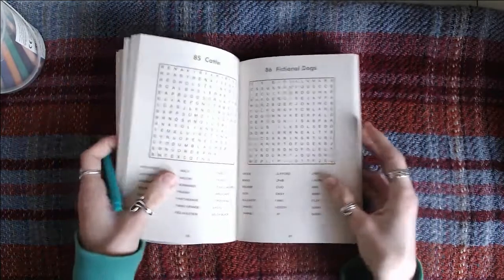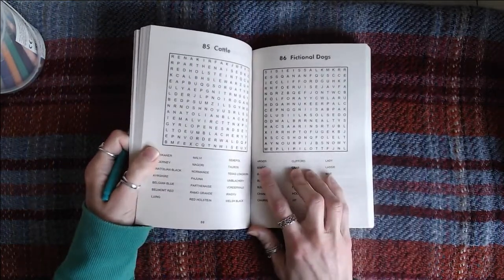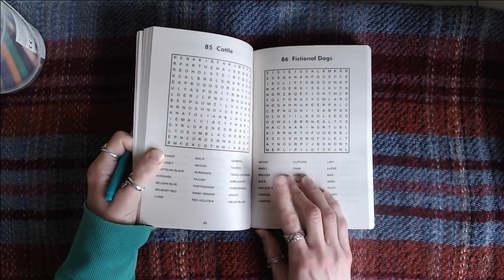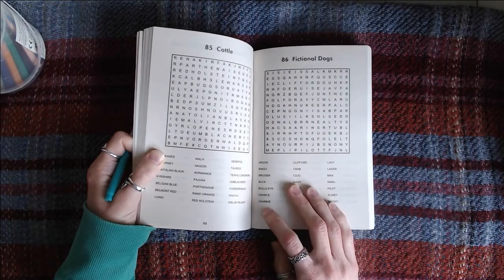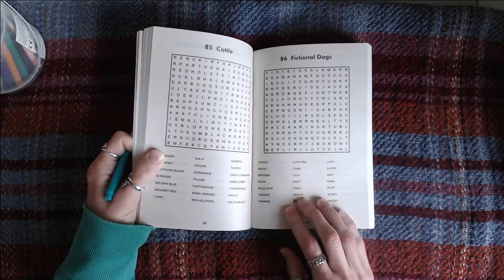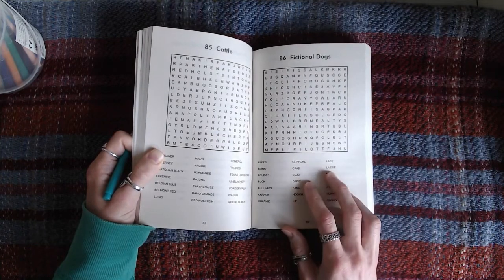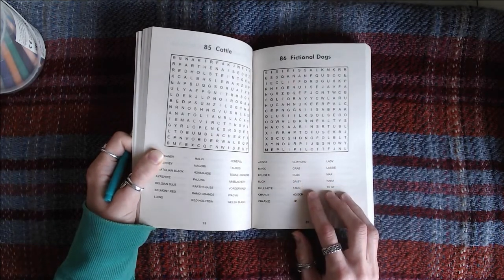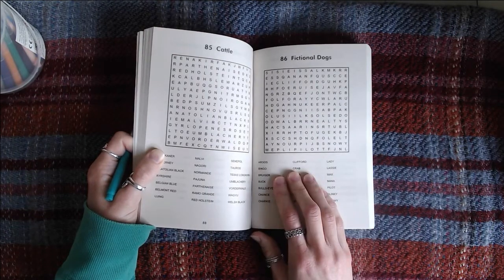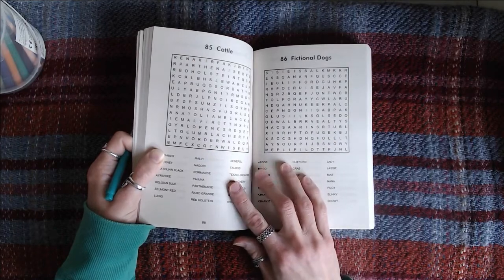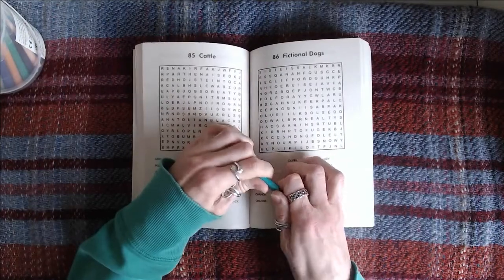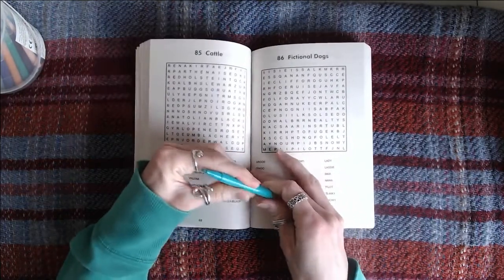We have got Argos, Bingo, Bruiser, Buck, Bullseye, Chance, Charkey, Clifford, Crab, Cujo, Daisy, Fang, Hooch, Chip, Lady, Lassie, Max, Nana, Pilot, Slinky, and Snowy. And an email just came in really annoyingly. I'm going to try and edit that out so it doesn't make an annoying ping.